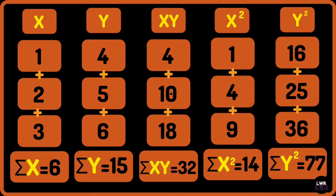The summation of x is equal to 6. The summation of y is equal to 15. The summation of xy is equal to 32. The summation of x squared is equal to 14. Lastly, the summation of y squared is equal to 77.